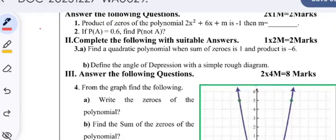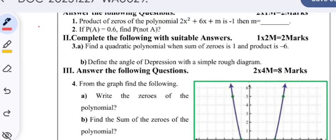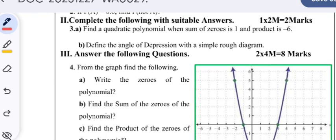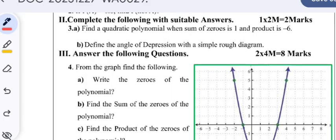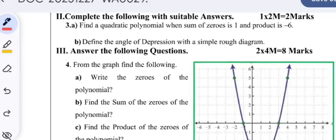If P(A) = 0.6, find P(not A). This question paper with answers is prepared and brought before you. Do not skip any part of this video. Complete the following with suitable answers.